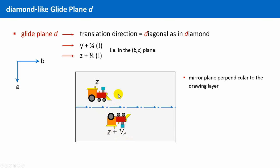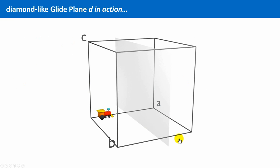Mirroring again, translation along b and along c leads to this state, and once again mirroring and translation and so forth. Let's look again how this looks in 3D.